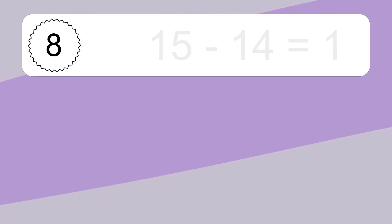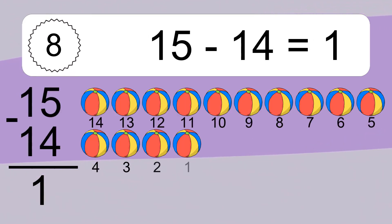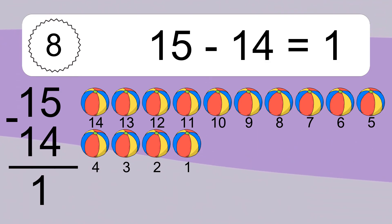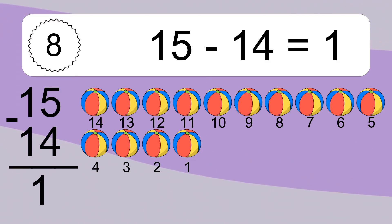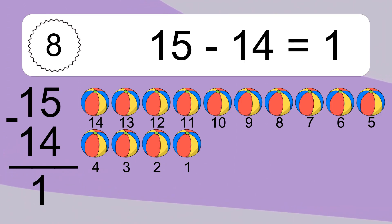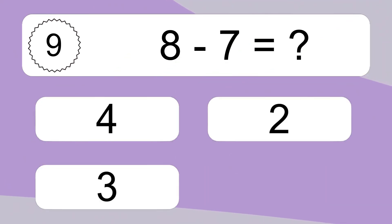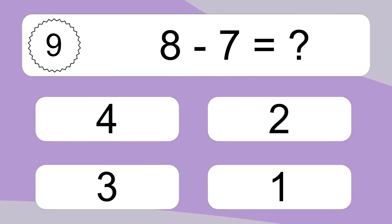15 minus 14 equals what? 15 minus 14 equals 1. Let's count it: 14, 13, 12, 11, 10, 9, 8, 7, 6, 5, 4, 3, 2, 1.